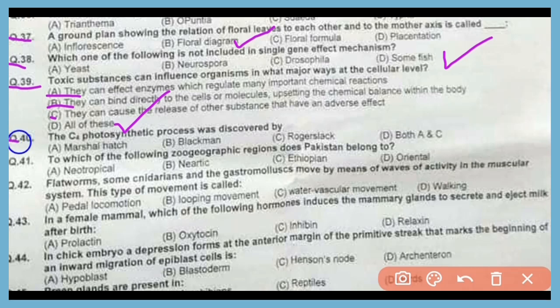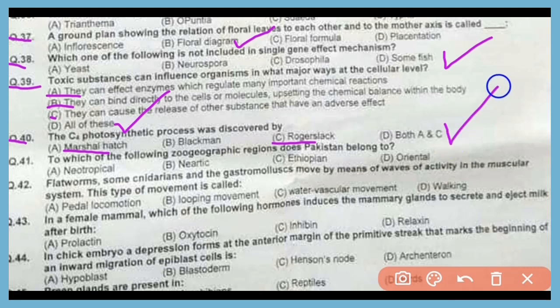Question number 40. The C4 photosynthetic process was discovered by Marshall H. and Rogers-Legg. The correct answer is option D.